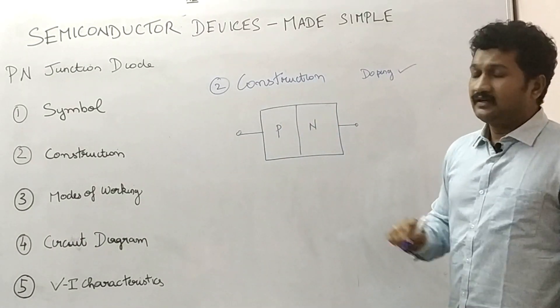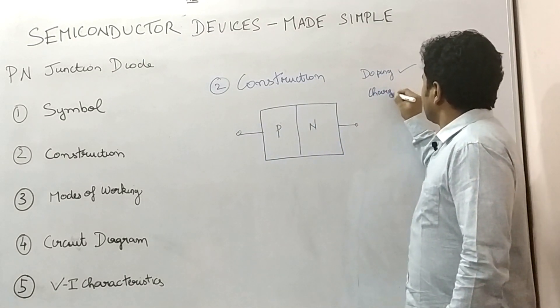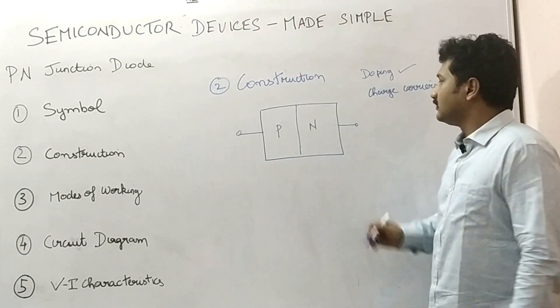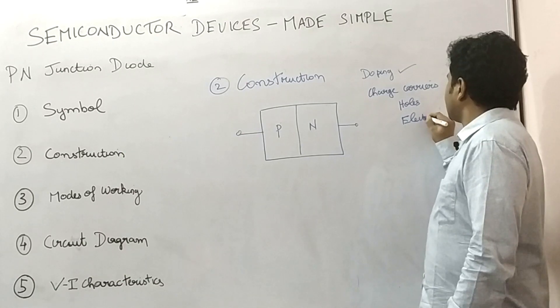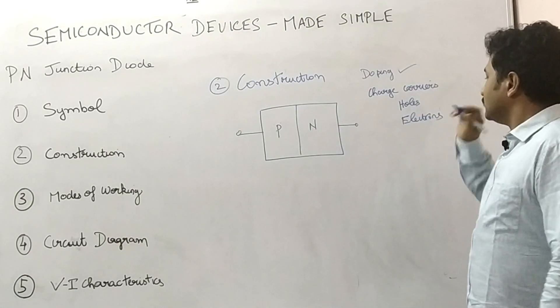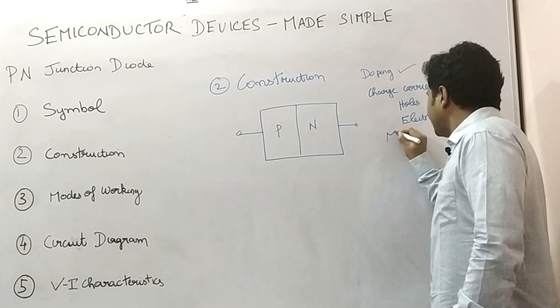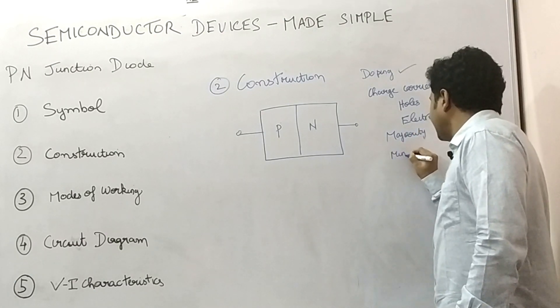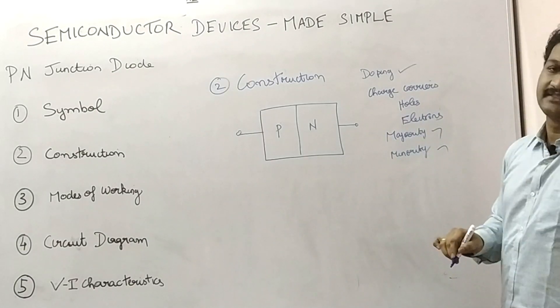Now doping. Next one is charge carriers. What do you mean by charge carriers? What are the charges universally available? Holes and electrons. These are the two charge carriers universally available. There are other two terminologies: Majority charge carriers and minority charge carriers.